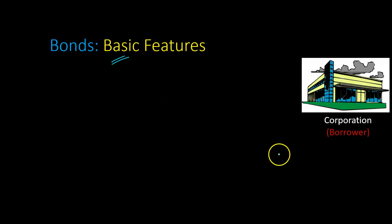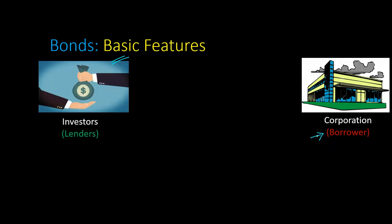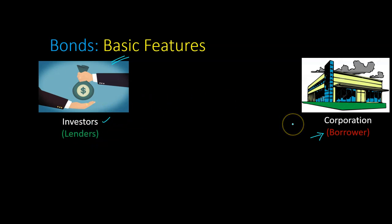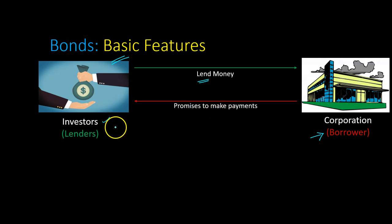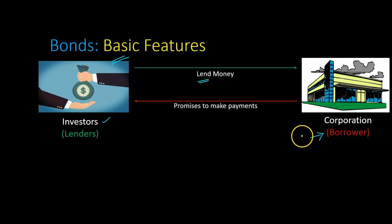Consider this. Imagine that there is a corporation and it's looking to borrow some money — we'll call it a borrower. It goes to potential lenders. You can think of these as investors, maybe individuals like you and I, sometimes accredited investors or rich individuals, sometimes even institutions, and they have the capital to lend to this corporation. These lenders will essentially lend some money to the corporation, and the corporation in turn promises to make some payments. As a lender, what you care about is what exactly is the amount of payments that you are going to receive from the borrower, and that is essentially spelled out by the bond.